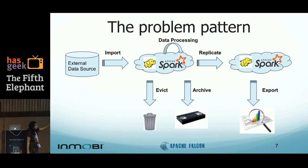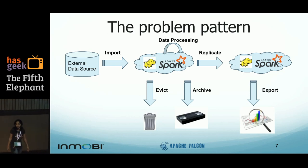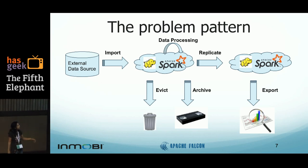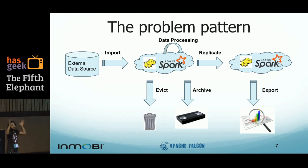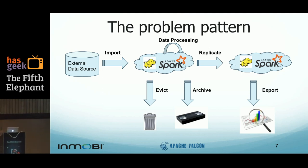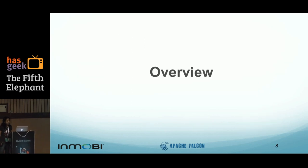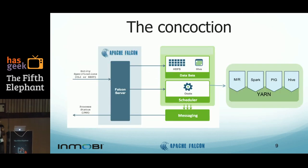We looked at the problem pattern. Typically what we do is: we import data from an external data source, do some processing on top of it, evict data, archive data, export data into warehouses, and replicate data for different processing on a different cluster. When I say external it's just external to the Hadoop cluster. This problem pattern repeats across all our data pipelines, and that's when we built Falcon.